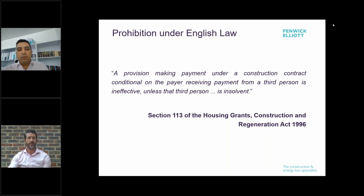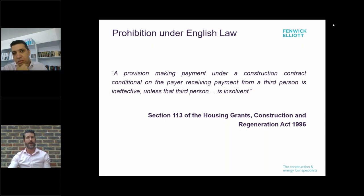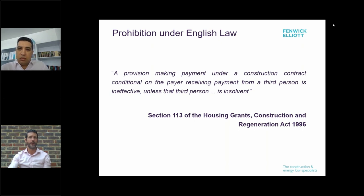It's worth pausing to consider why these provisions were introduced, particularly since they are not common in other jurisdictions. On first blush these provisions may seem unreasonable to the contractor — they're in a situation where the employer has stopped paying, so why should the contractor have to pay the subcontractor and be left out of pocket? The short answer is that the contractor is in control of the relationship with the employer to the extent the subcontractor is not. The contractor has the ability to exercise rights under the main contract to enforce payment from the employer. If the contractor chooses not to exercise those rights — perhaps to protect a long-standing commercial relationship — why should the subcontractor have to wait?